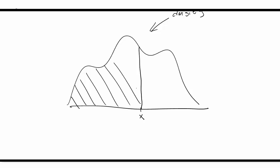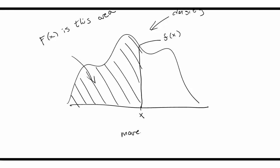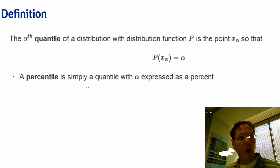Think of it as an infinite population of test scores. The alpha quantile is found by moving a threshold along the x-axis until exactly alpha probability lies below it — the same idea as with empirical quantiles in data. The percentile is simply a quantile with alpha expressed as a percent, and the median is the most well-known quantile: the 50th percentile.